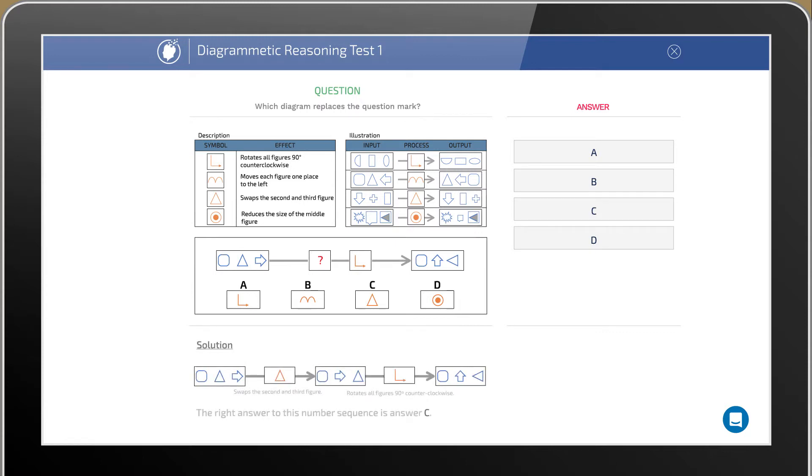We know that we have to rotate all figures 90 degrees counterclockwise, but looking at the final figure you also see that two objects have switched places. Looking at the illustration, we see that the triangle has this effect. The right answer is C.